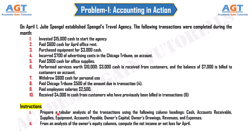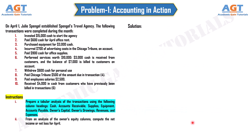We are instructed to first prepare a tabular analysis of the transactions using the following column headings: Cash, Accounts Receivable, Supplies, Equipment, Accounts Payable, Owner's Capital, Owner's Drawings, Revenues, and Expenses. And then, from an analysis of the Owner's Equity columns, compute the net income or net loss for April. Let's move forward and solve the problem, starting with instruction number 1.